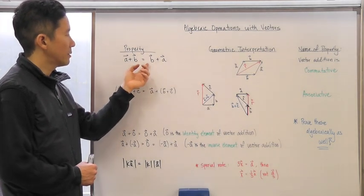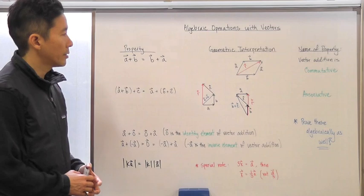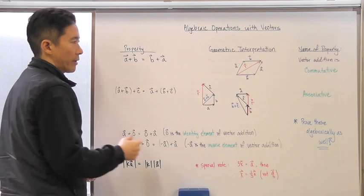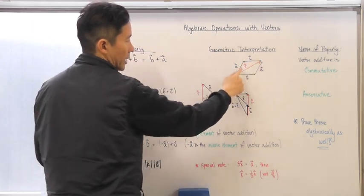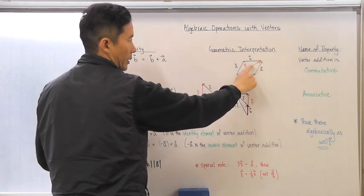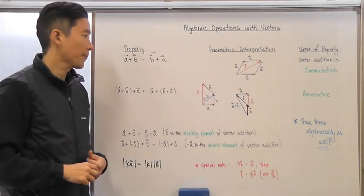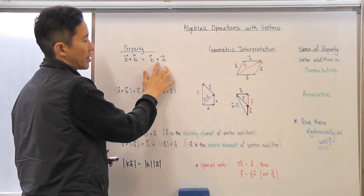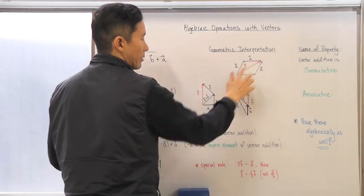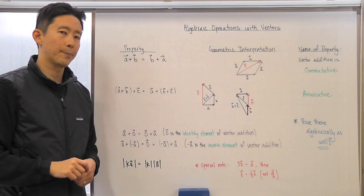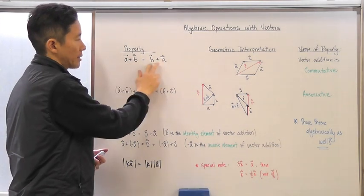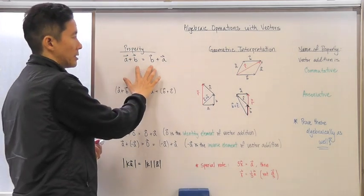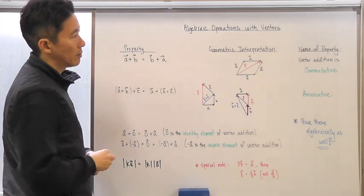Here's the first property: vector a plus vector b is equal to vector b plus vector a. Looking at the geometric interpretation, here's the a vector plus the b vector — the original starting point to the endpoint is represented by the resultant vector r. Now if we take the b vector first and add the a vector to it, notice that we get the exact same resultant vector, with the same direction and same magnitude.